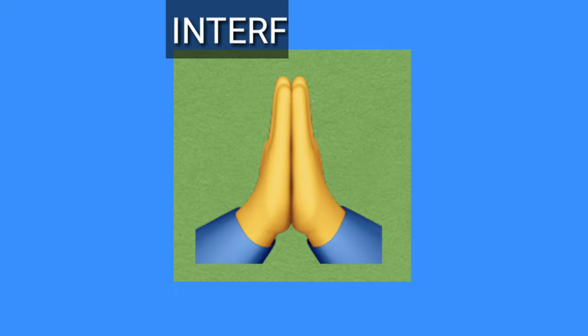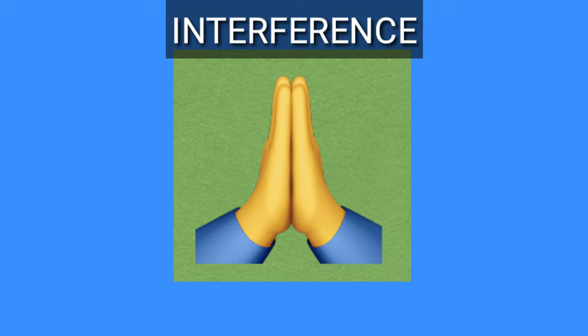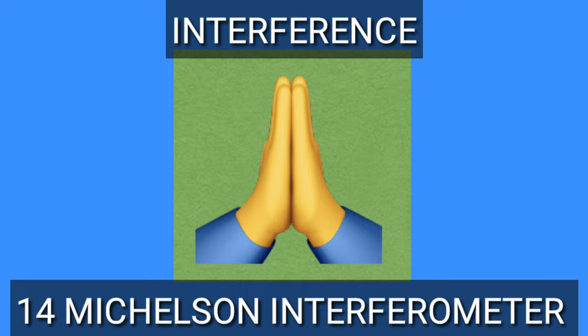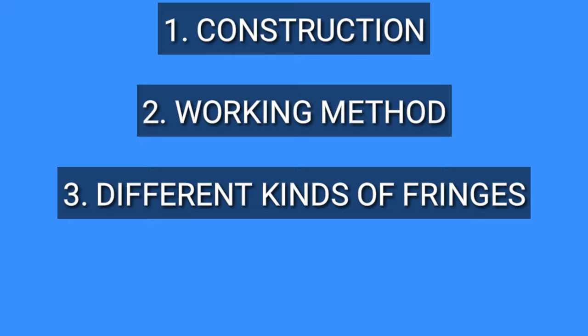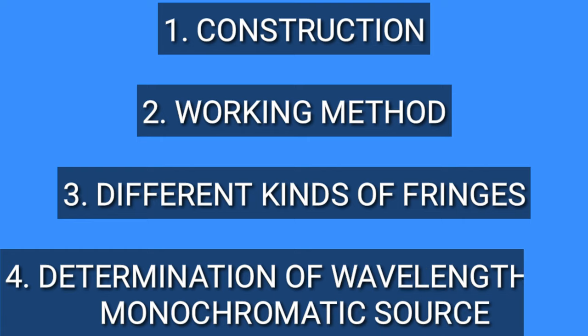Hello everyone. Welcome to the 14th topic of interference of the second unit. The topic is called the Michelson interferometer. In this, we will learn about the summary of Michelson interferometer construction and working method. We will also discuss why different kinds of fringes are formed and the determination of wavelength of a monochromatic source.